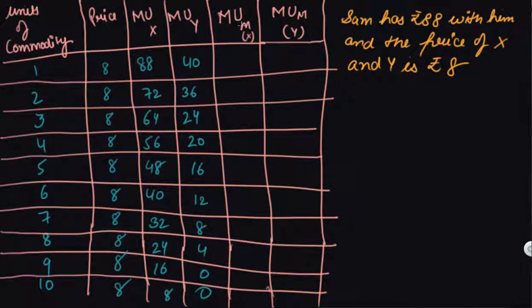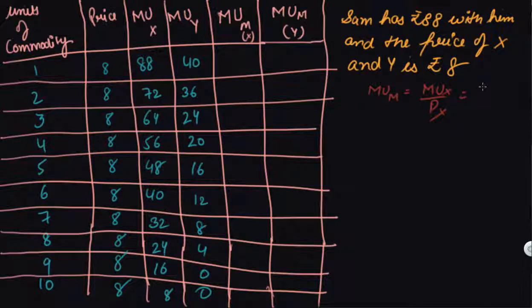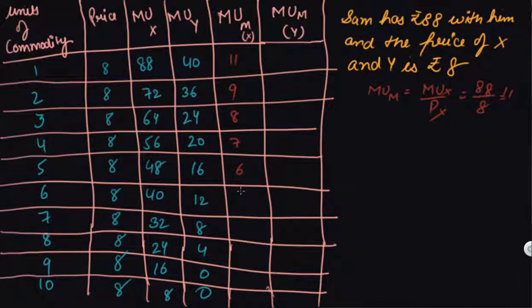What should we do? Number one, we should calculate the marginal utility of money (MU_M) in the case of good X. How do we calculate it? That is MU_x divided by P_x. So in the first unit, MU_x is 88 and P_x is 8, giving us 11. In this way we calculate: 11, 9, 8, 7, 6, 5, 4, 3, 2, 1. This is the MU_M of X we have got.